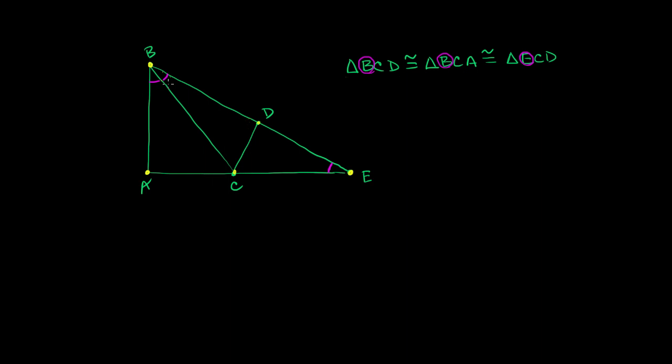And then we also know that the C angle, so in BCD, this angle right over here, is congruent to the C angle in BCA. The C angle is right over here, or C is the vertex for that angle in BCA. And that is also the C angle in ECD. In ECD, we're talking about this angle right over here. So these three angles are going to be congruent.